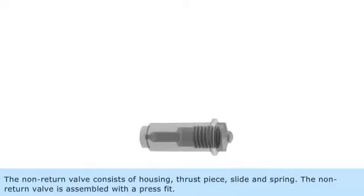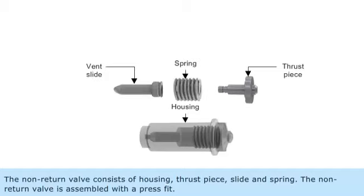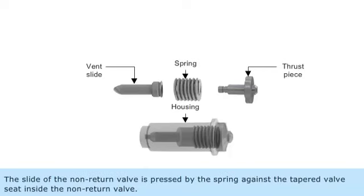The non-return valve consists of a housing, thrust piece, slide, and spring. The non-return valve is assembled with a press fit. The slide of the non-return valve is pressed by the spring against the tapered valve seat inside the non-return valve.